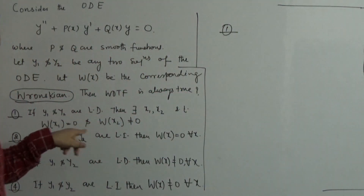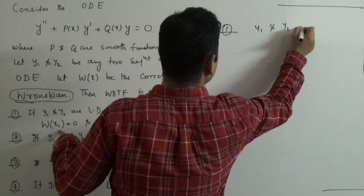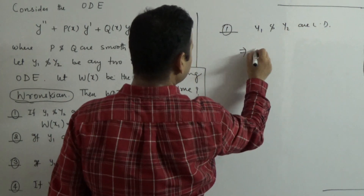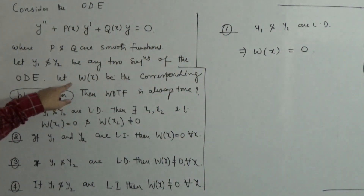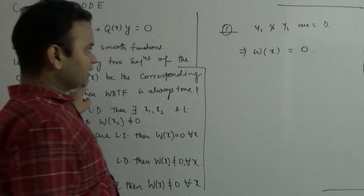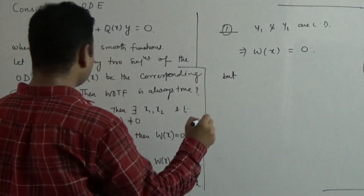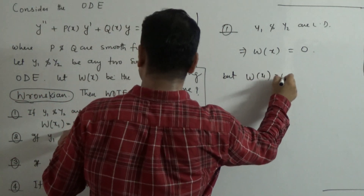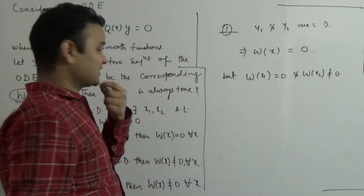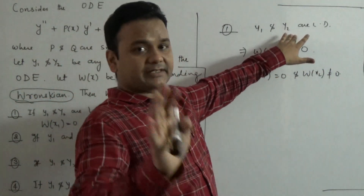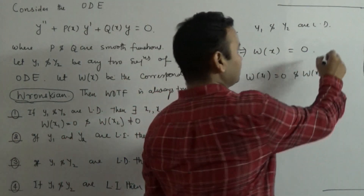Now let's use this. If y1 and y2 are given to be linearly dependent, by the theorem the Wronskian W(x) = 0 for all x. But Option 1 demands that there exists x1 where the Wronskian is 0 and x2 where the Wronskian is not equal to 0. That is a contradiction — it is not possible. So Option 1 is wrong.